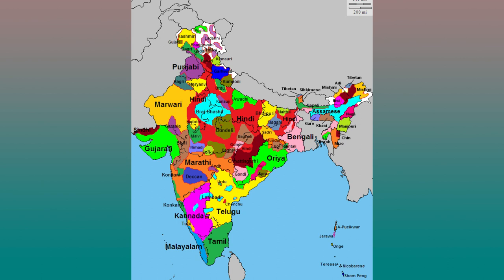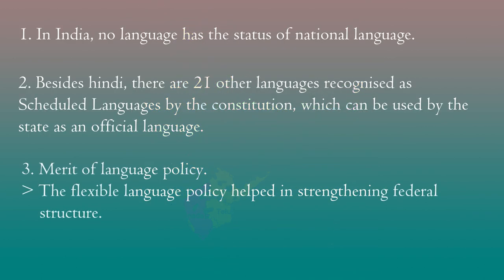There are 12 schedules in the Indian Constitution. Among these, the 8th schedule deals with language policy. Some tribal languages are also included in the 8th schedule of the Indian Constitution. These are some examples of tribal languages. What is the merit of this language policy? This flexible language policy helped in strengthening the federal structure.